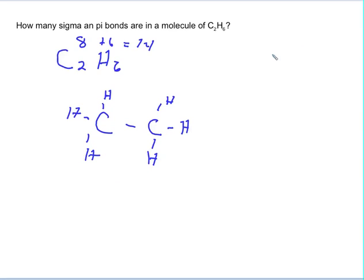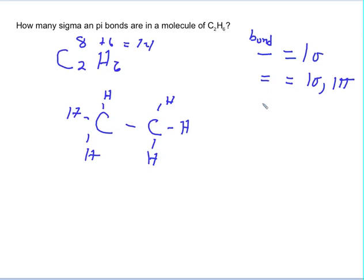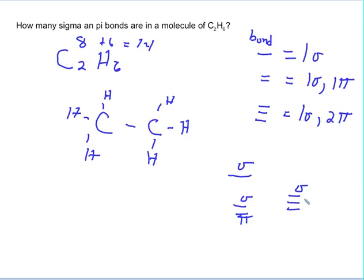Here's a simple rule: a single bond always equals one sigma bond. A double bond always equals one sigma and one pi. And a triple bond will always equal one sigma and two pi bonds. So a single bond is always a sigma; a double bond always contains one sigma and one pi; and a triple bond will always contain one sigma and two pi.